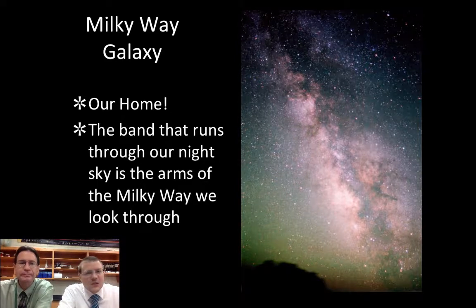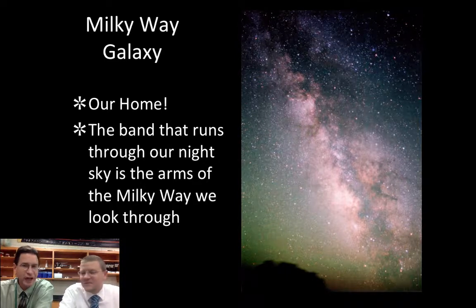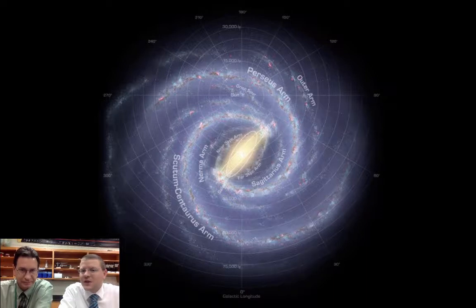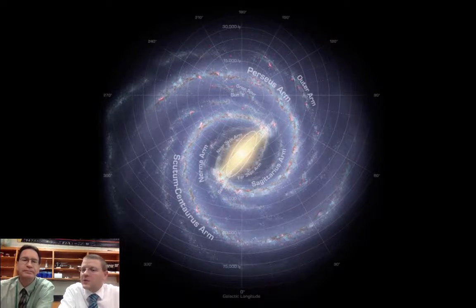The ancients thought it was just a river of milk, flowing milk, and that's where we get our name, the Lactose Way. So this is an artist's representation of what we think our Milky Way galaxy looks like. It looks spiral in its shape, and it looks like we're a barred spiral because of that elongated stretch out the middle.